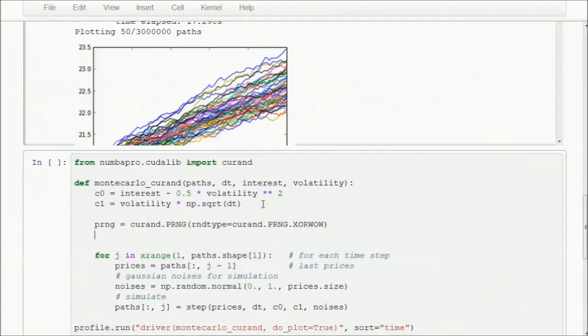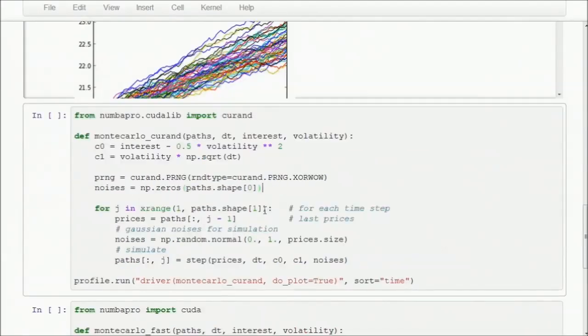We only have to do this once, so we're going to keep it outside of the for loop. Next, we need a place to store our newly generated random values, so we're going to create a numpy array filled with zeros. This will be located in the host memory. The final step is to change the normal random call and move the random noise generation to the GPU. So we'll change this line and use our GPU random number generator.